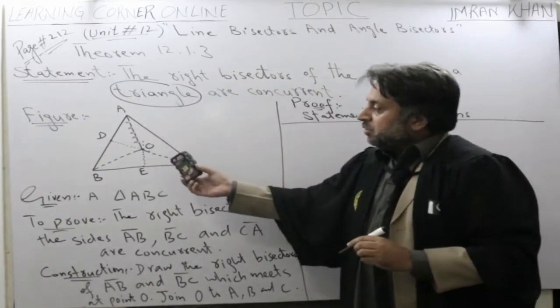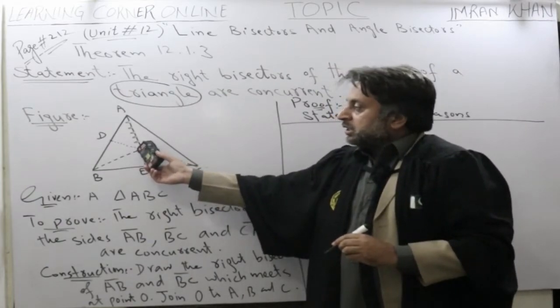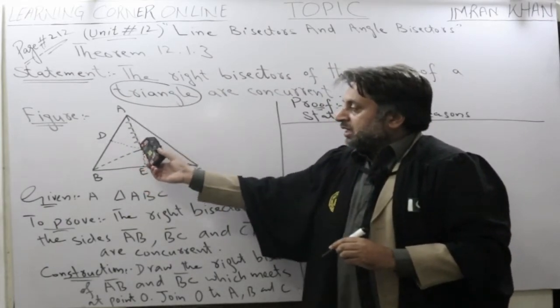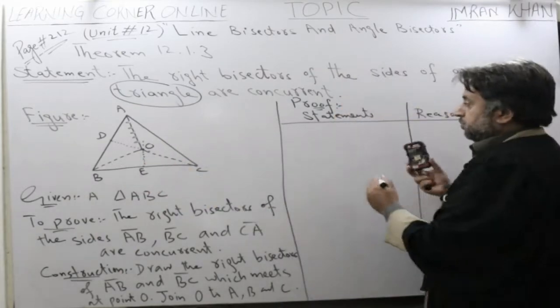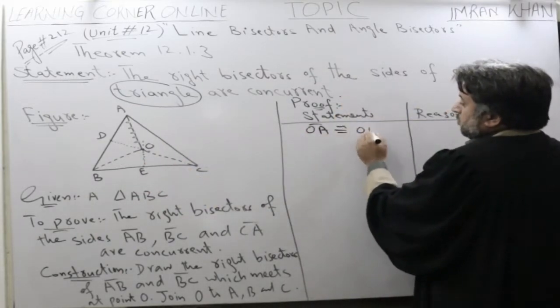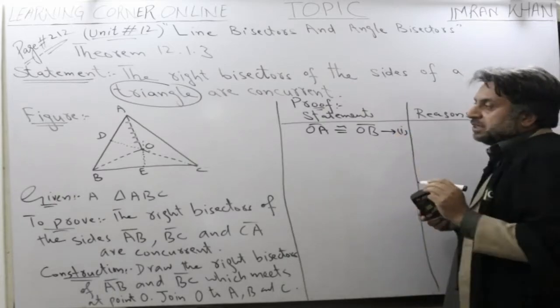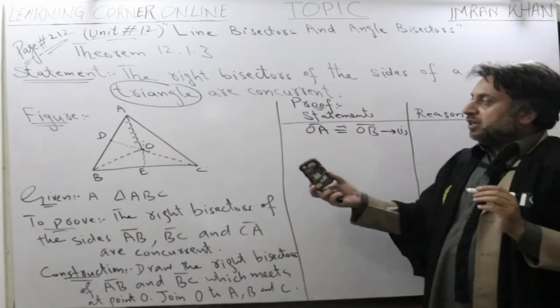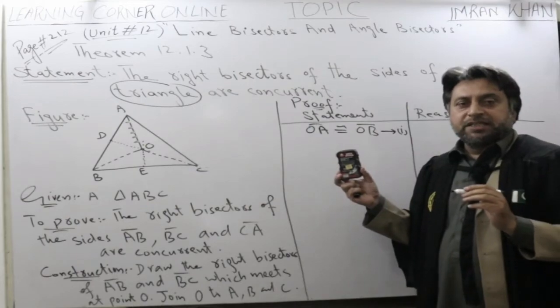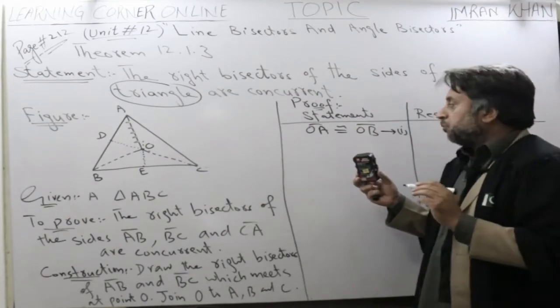Now, as we know that O is on the bisector of AB, it means that OA is congruent to OB. The reason is what? In our previous theorem, we learned that any point on the right bisector of a line segment is equal distance from its endpoints.